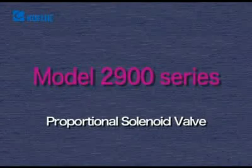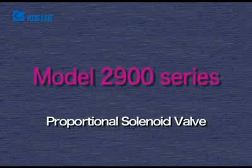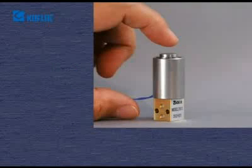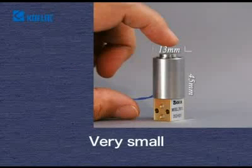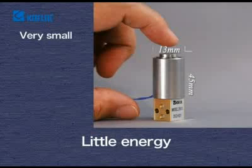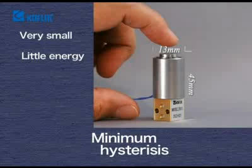The various models in the 2,900 series have the following features. First, they are very small, as you can see. They consume little energy, and hysteresis is minimum.